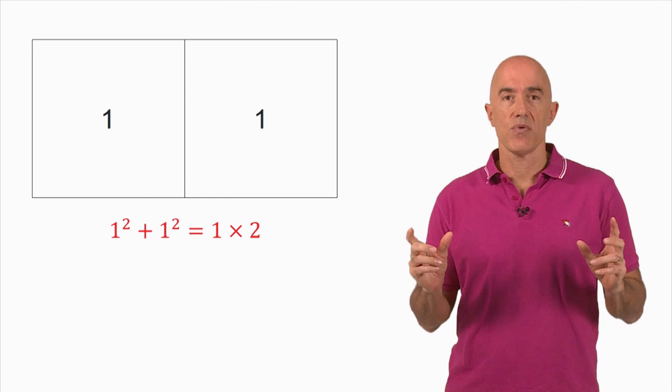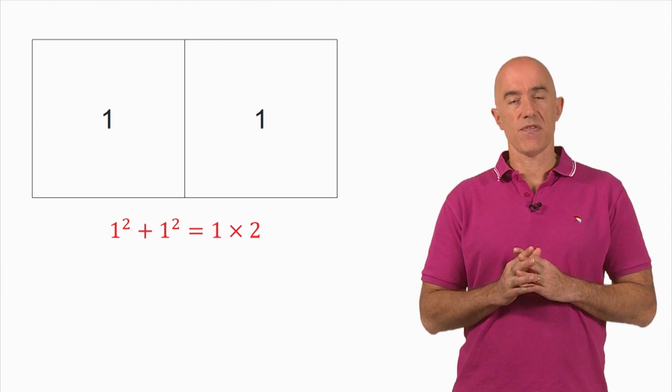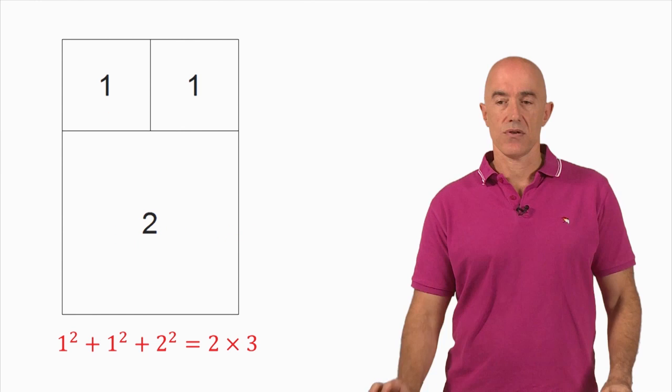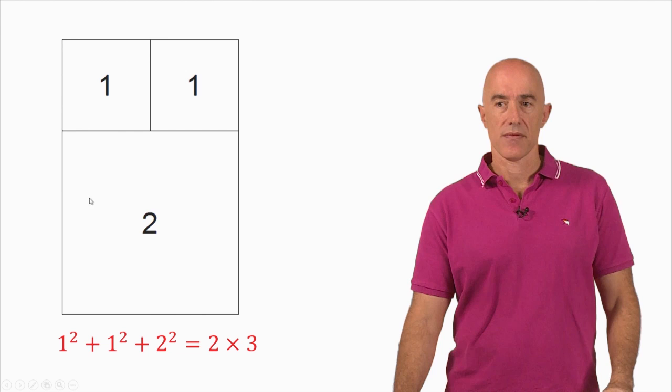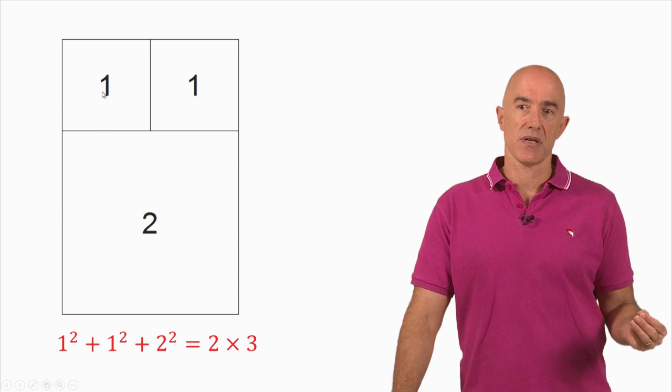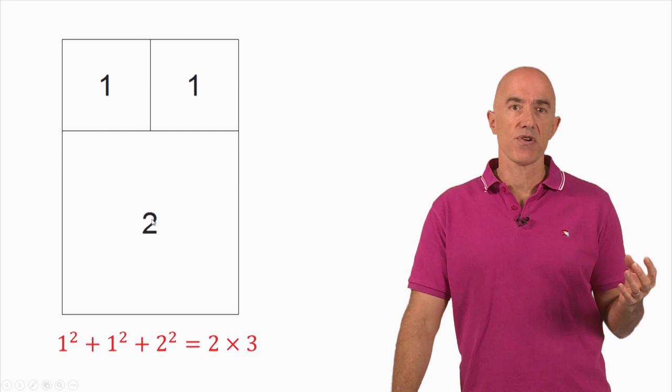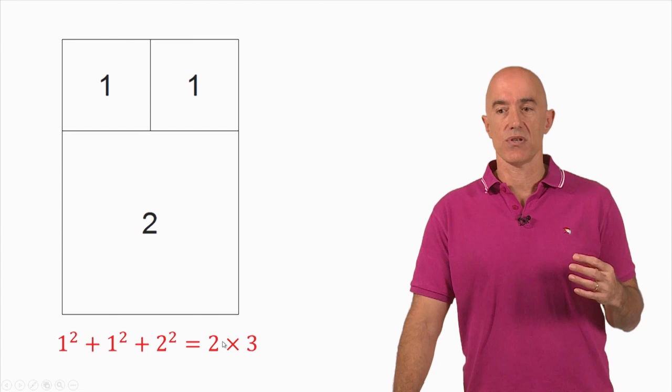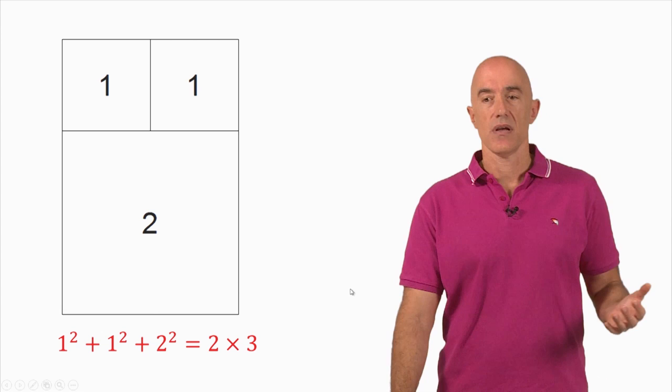To these two Fibonacci squares we can now add another square with the length of the third Fibonacci number, F sub 3, which is 2. We add one more square on the bottom. Then the identity says: 1 squared plus 1 squared plus 2 squared is equal to the area of a 2 by 3 rectangle.